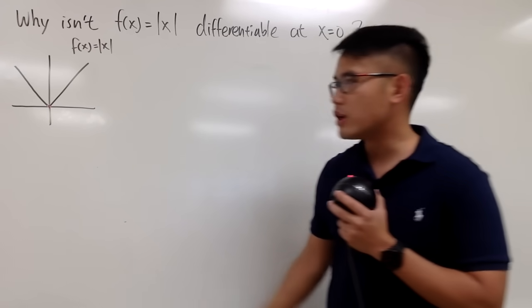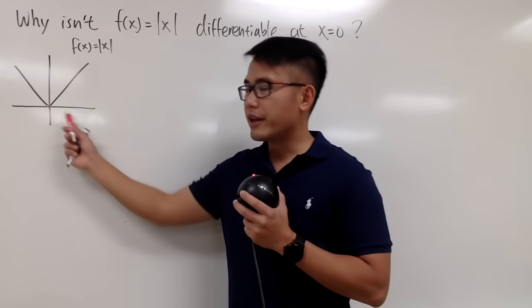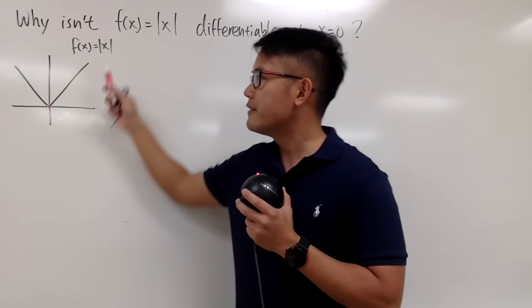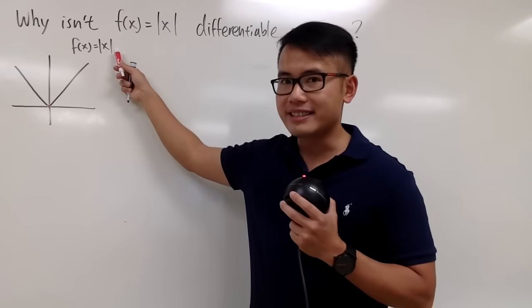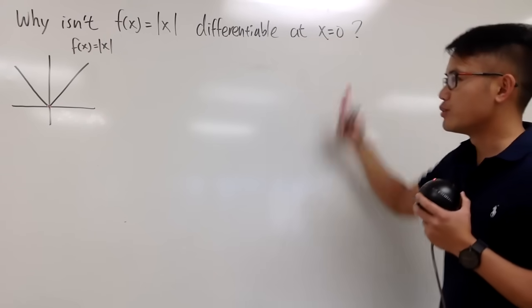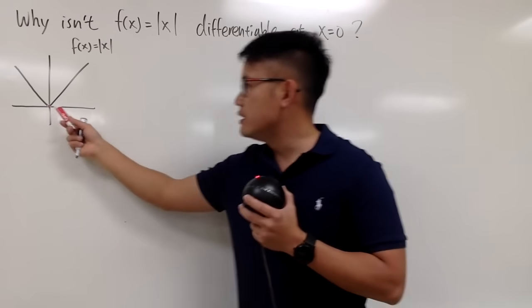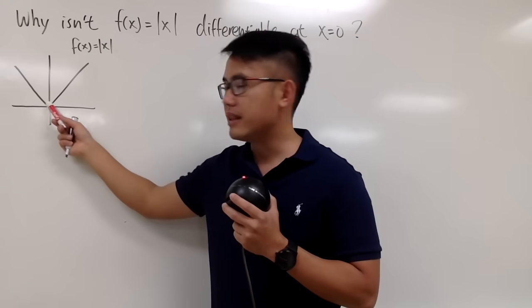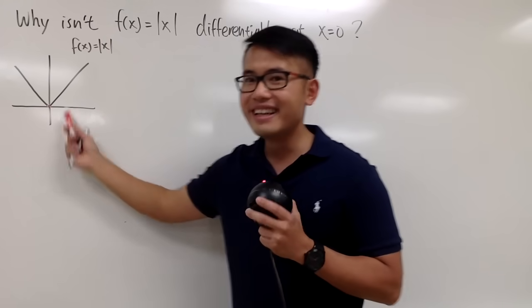First, we'll take a look at the picture. This right here is the graph for absolute value of x. And when x is equal to 0, it's this point at this corner.